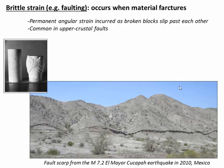Brittle strain occurs when the rock actually breaks — when you've pushed it too far and get an actual fracture. This is essentially permanent angular strain: the rock is broken, the blocks slip past each other, and it's unrecoverable. This is very common in the upper crust where rocks break along faults. Here's an example of a huge fault scarp that cut up through Earth's surface during an earthquake, where rocks on either side have been broken and offset from each other in brittle failure.